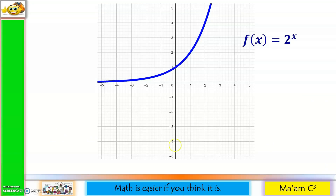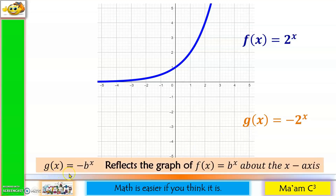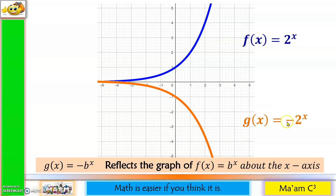In the previous slide, we learned the effect on our graph when we make our exponent negative. Now, what do you think is the effect if we make our base negative? So, negative b raised to x reflects the graph of f of x equals b raised to x about the x-axis. So this time, the reflection is about the x-axis. That is the effect when we make our base negative — it will reflect about the x-axis.